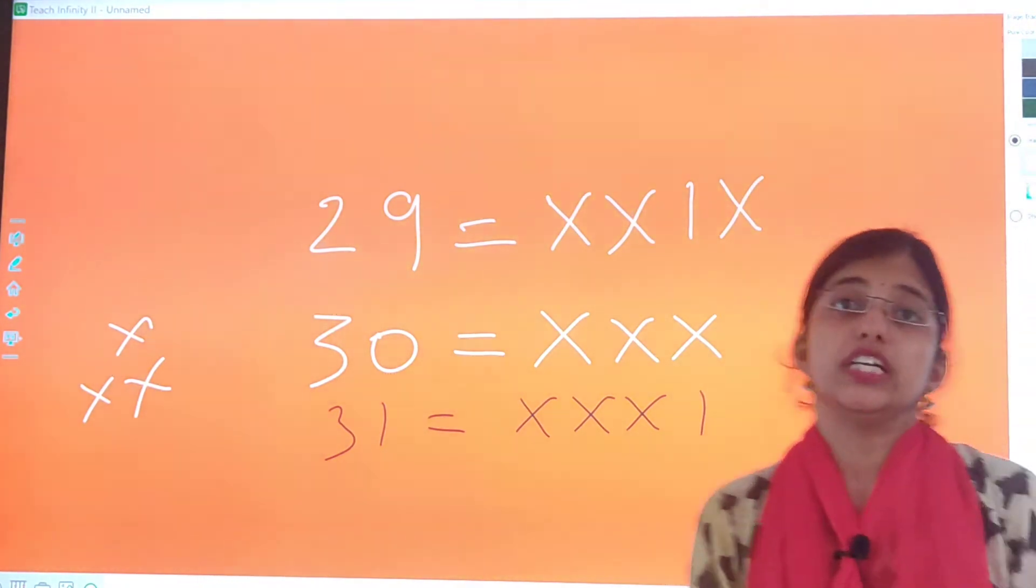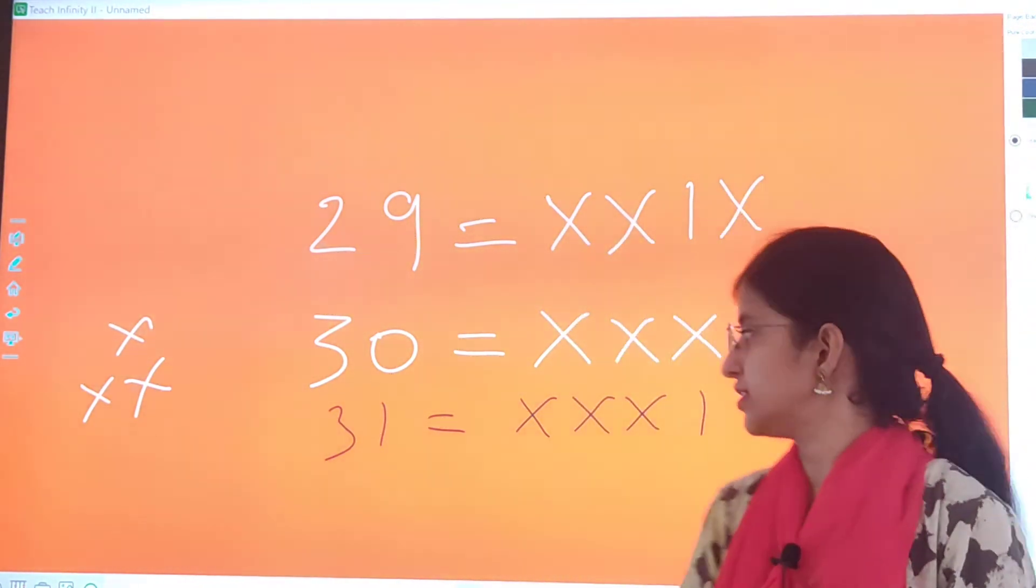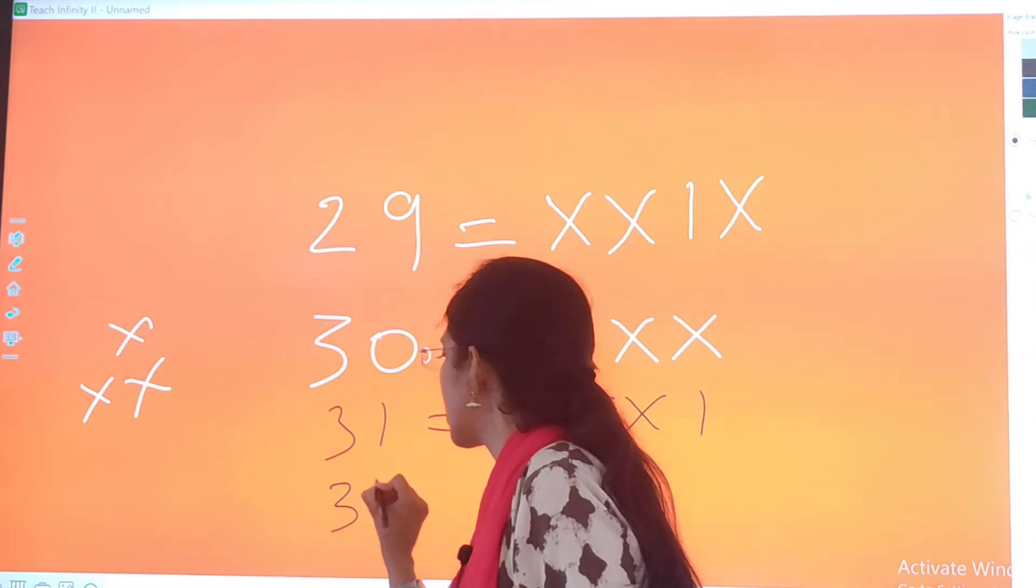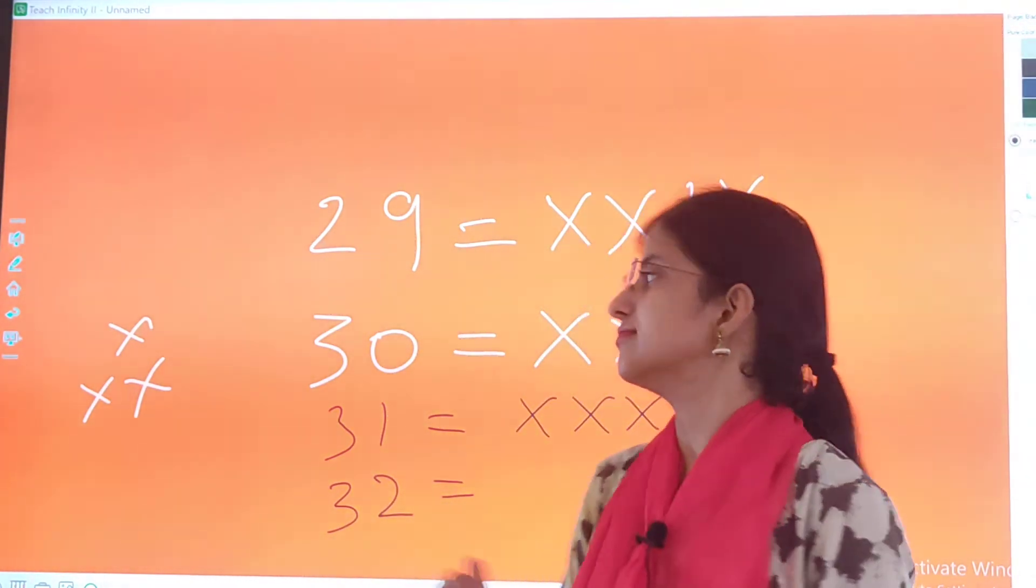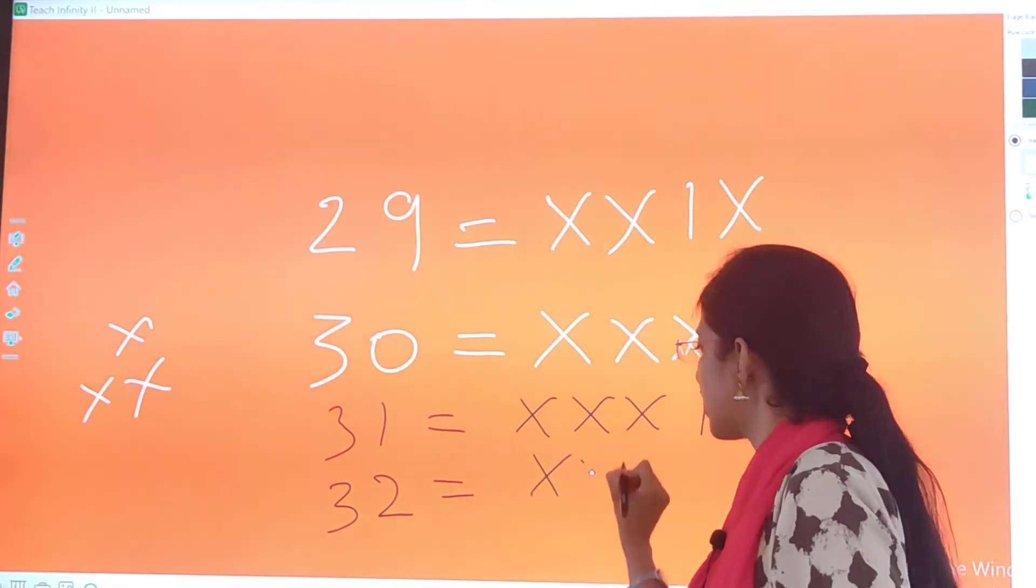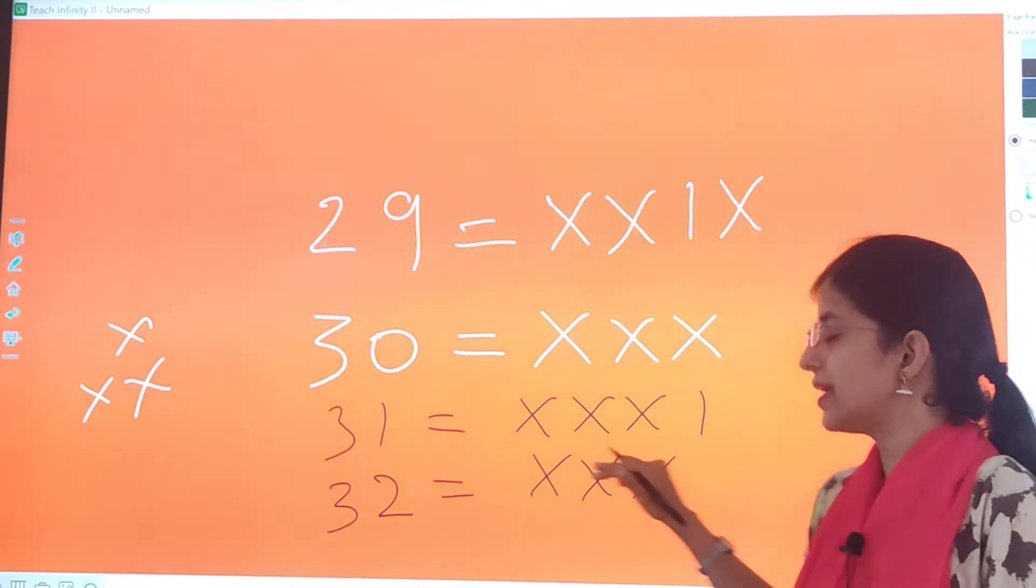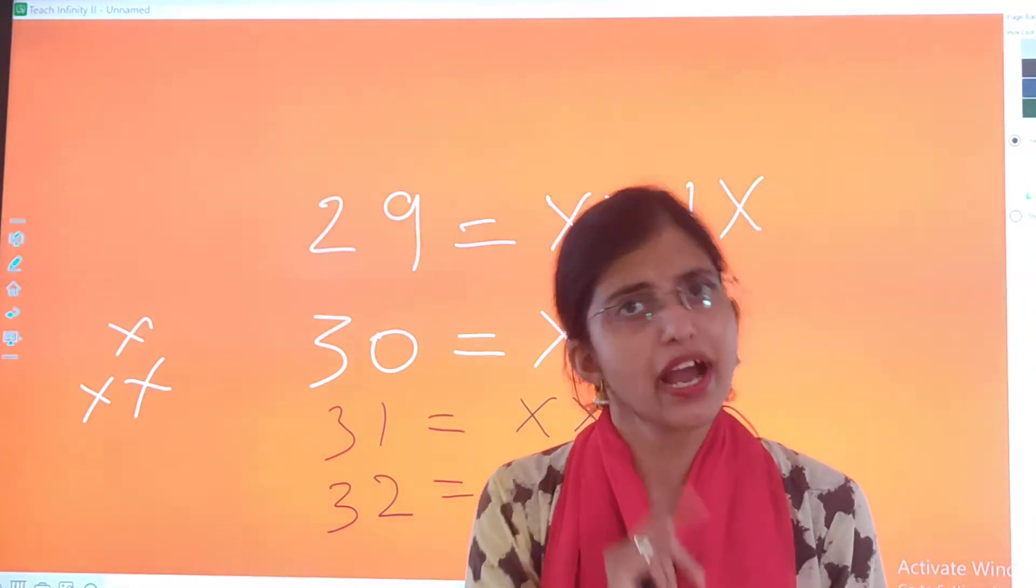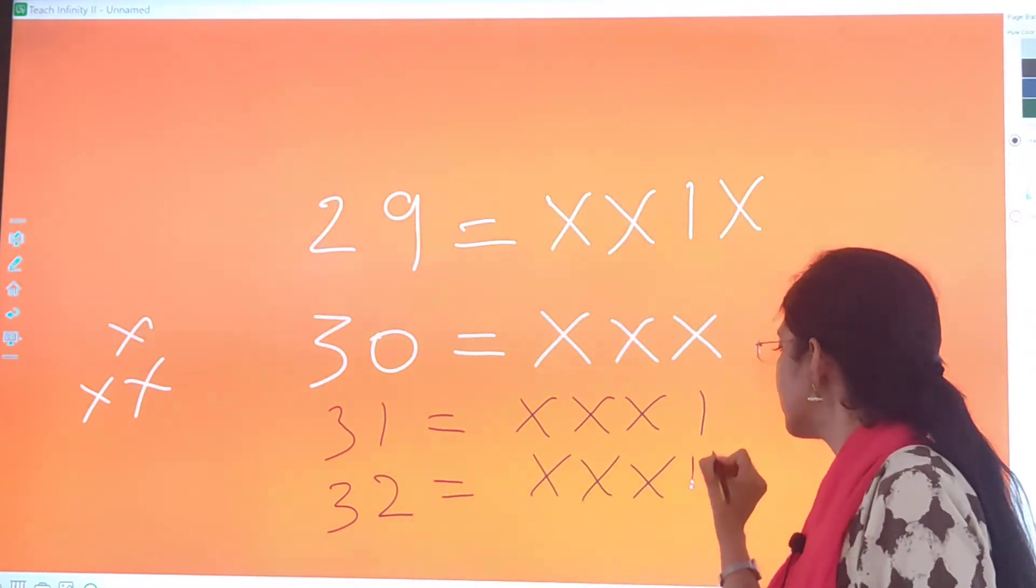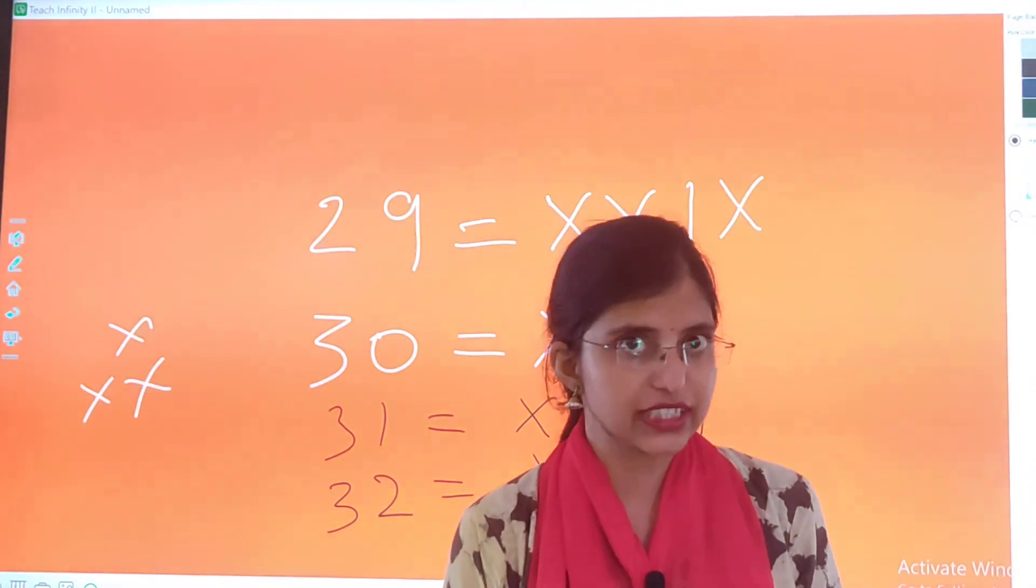32. 32 kaise ho ga? Chalo, batao mujhe. How will I represent 32? First, we will write triple X. Triple X stands for 30. And 2 is represented by double I. So this is how 32 is represented.